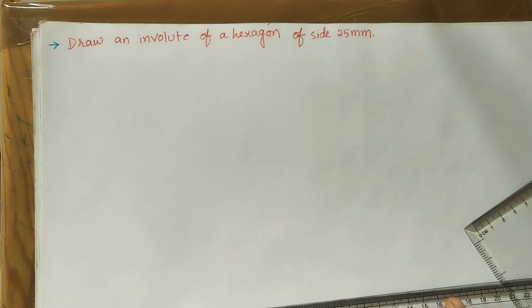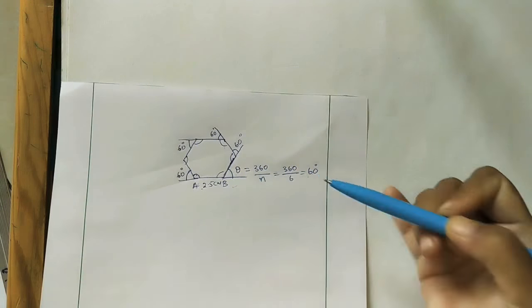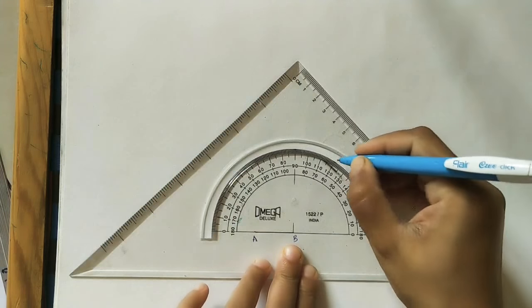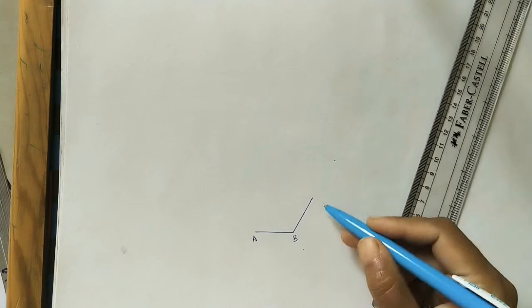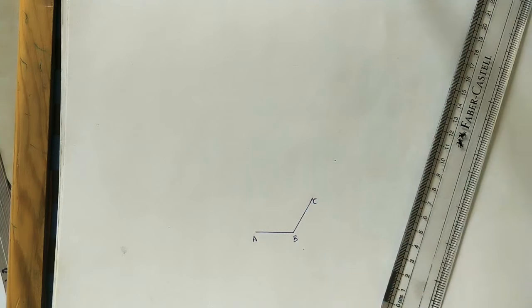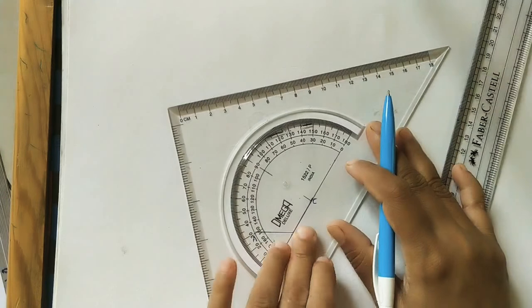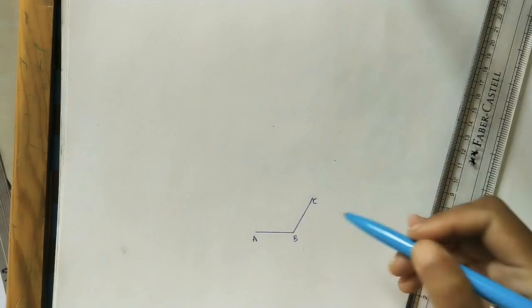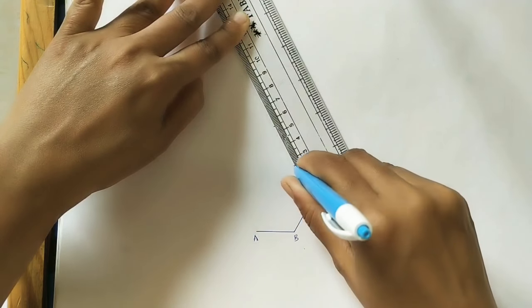First, take AB with a length of 2.5 centimeters. Using the instruments, mark the endpoints and join them, naming the points A and B. After that, at point B take 60 degrees using a protractor, and in that direction mark 2.5 centimeters to get point C.